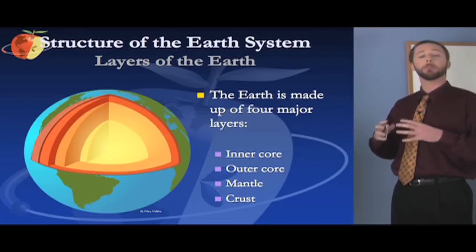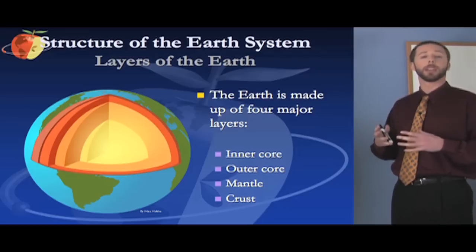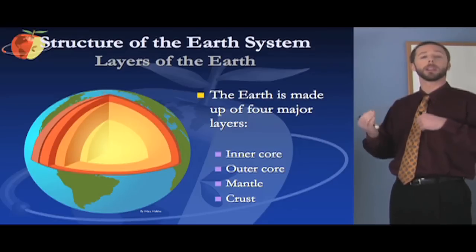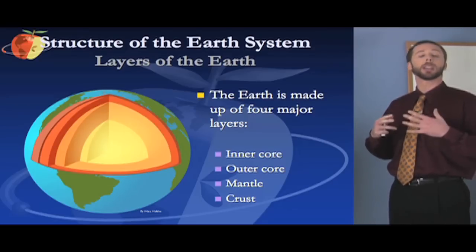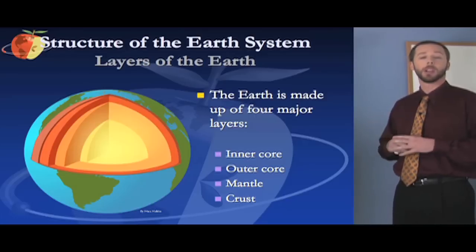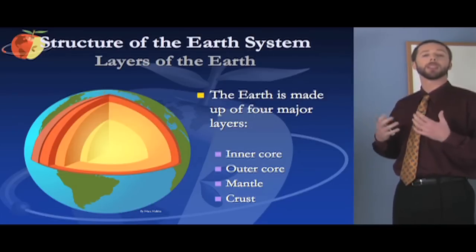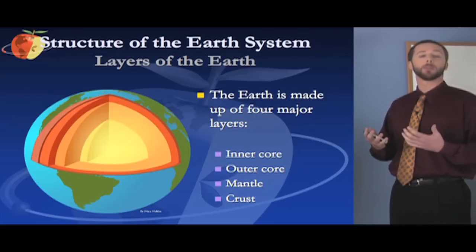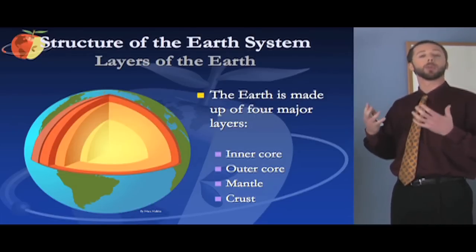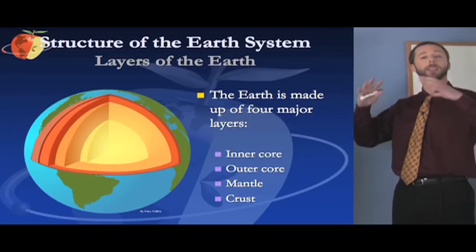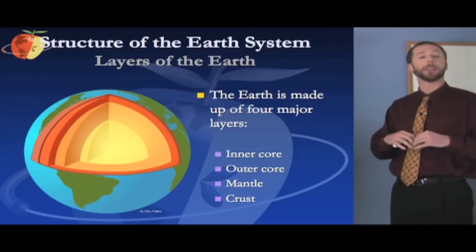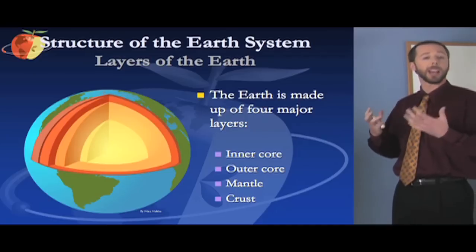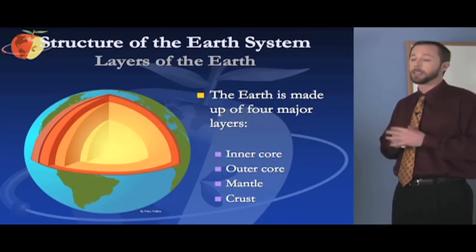The flow of molten metal in the outer core as the earth spins is actually what gives the earth a magnetic field. That magnetic field is responsible for things like the aurora borealis — the northern lights — because it catches magnetic things and brings them down at the earth's poles. So the earth is kind of like a big magnet.